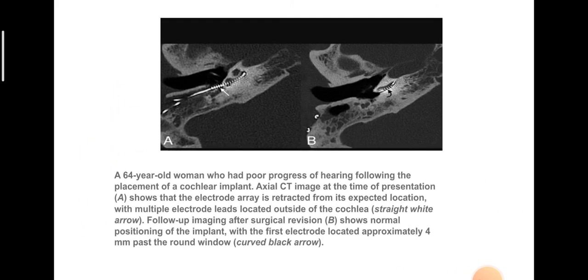Here we see a 64-year-old woman who had poor prognosis of hearing following cochlear implant placement. The axial CT at presentation shows the electrode array retracted from its expected location, with multiple electrode leads located outside of the cochlea. Follow-up imaging after surgical revision shows normal position of the implant, with the first electrode located approximately 4 mm past the round window.